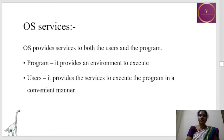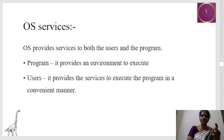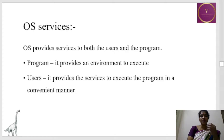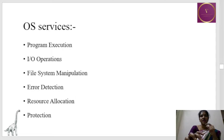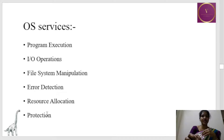OS services — what are the services that the OS provides to us? The OS provides services both to programs as well as users. From a program's point of view, OS provides an environment in which the program can execute, whereas from the user's point of view it provides the service of executing the program in a convenient manner. The services that OS gives are: program execution, I/O operation, file system management, error detection, resource allocation, and protection.